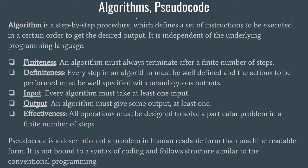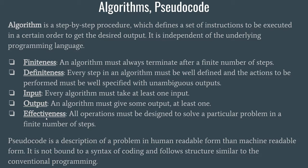The third property is input: every algorithm must take in some input, otherwise it makes no sense, because an algorithm has to work on some input that the user provides. The fourth property is output: corresponding to the input provided, the user must receive some output — it may be one or more outputs, but there must be some. Lastly, effectiveness: all operations must be designed to solve a particular problem in a finite number of steps. If your problem is making tea but you write an algorithm to prepare curry, that is not an effective algorithm.